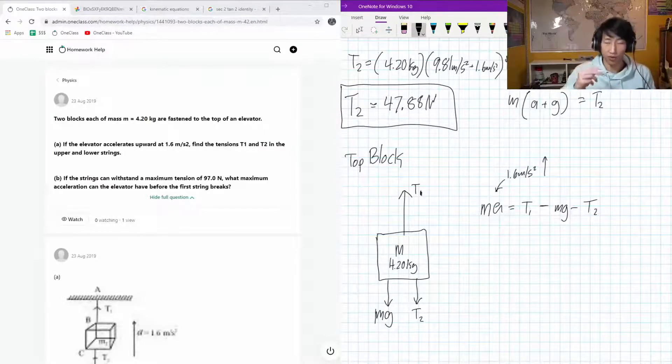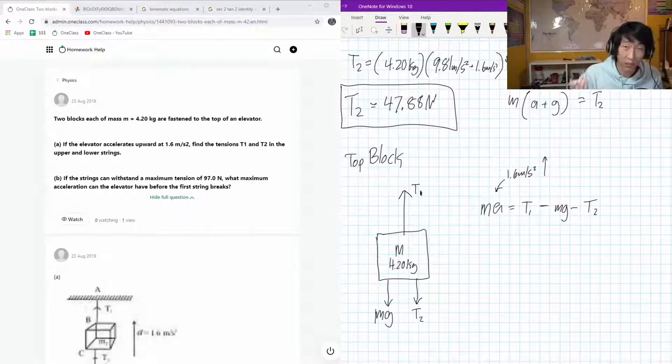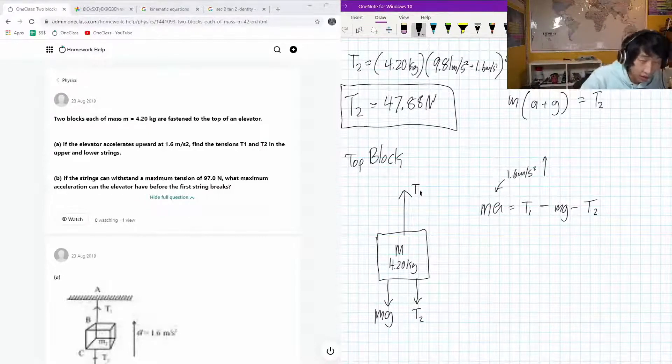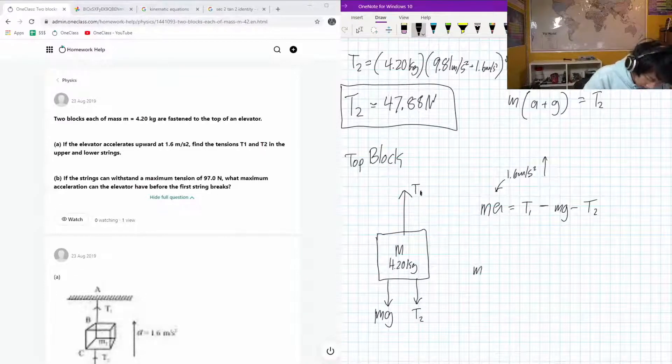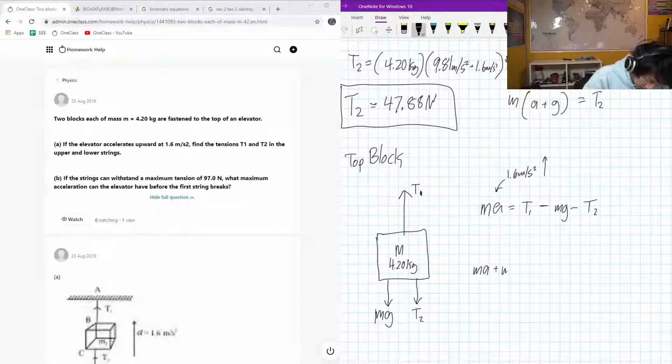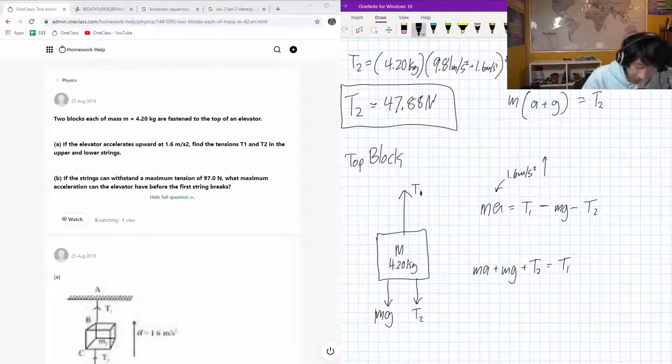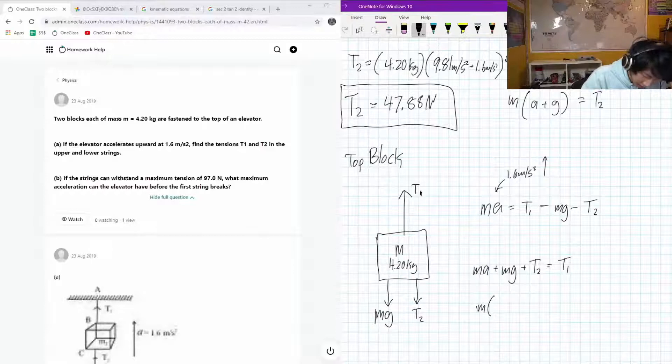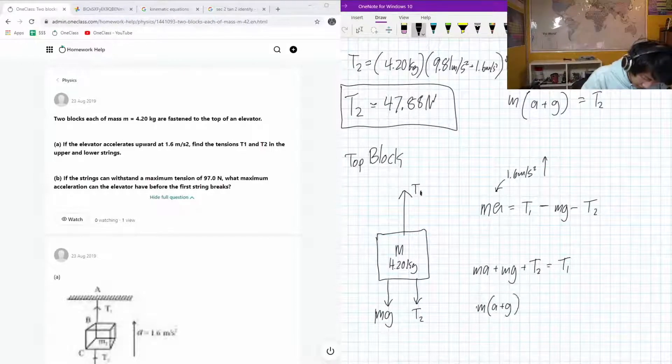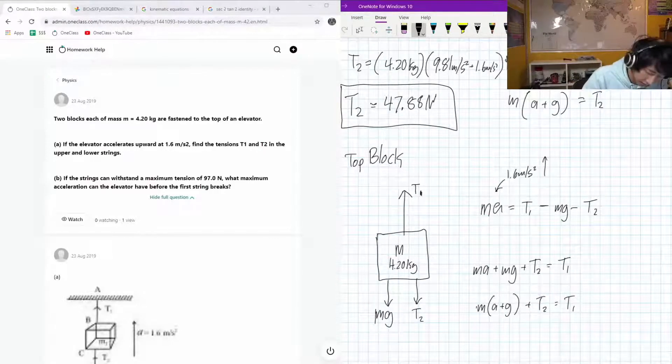Because if you're trying to go upwards and you're bringing up someone else with you, of course, you're going to need more work to have the same acceleration. Okay, now we're trying to solve for T1 here. So what that's going to mean is ma plus mg plus T2 is equal to T1. Seems about reasonable, and this is just going to be m times a plus g plus T2 is equal to T1.